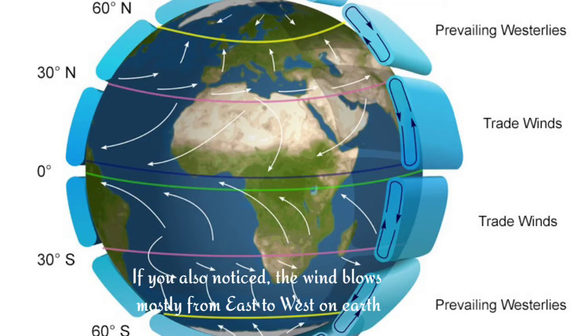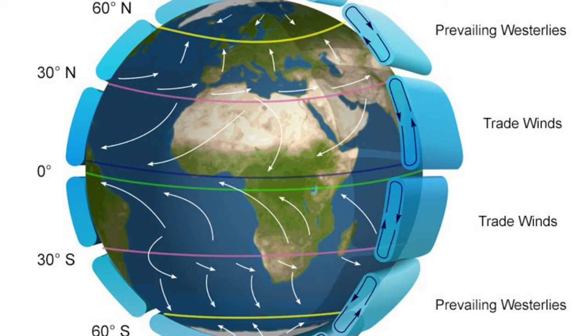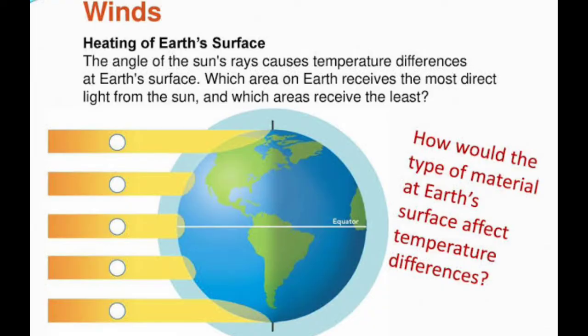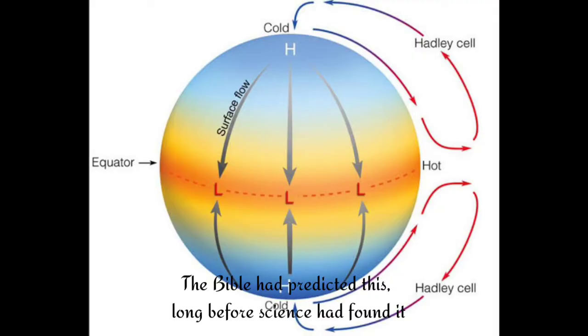If you also noticed, the wind blows mostly from the east to the west on earth, because the sun rises from the east and heats up the land from the east. The Bible has predicted this long before science had found it.